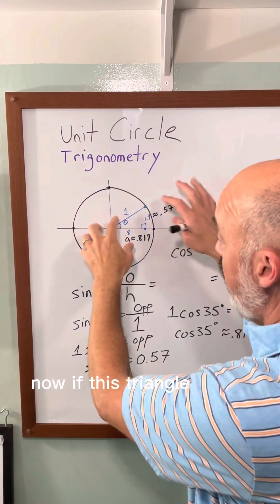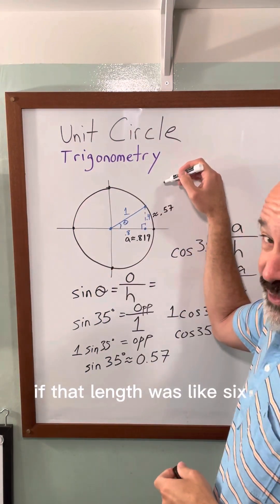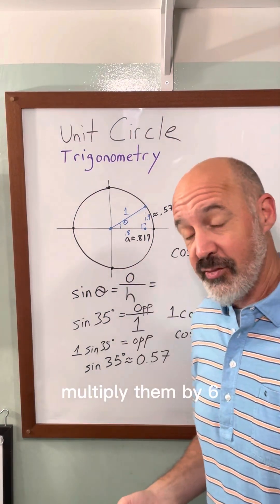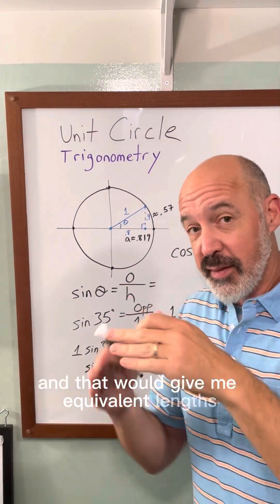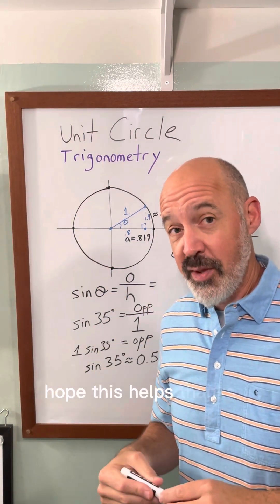Now if this triangle didn't have a hypotenuse of 1, if it was scaled up, if that length was like 6, then I would just take these two numbers, multiply them by 6, and that would give me equivalent lengths when scaling up the triangle. But that's for another video. Hope this helps. Thanks.